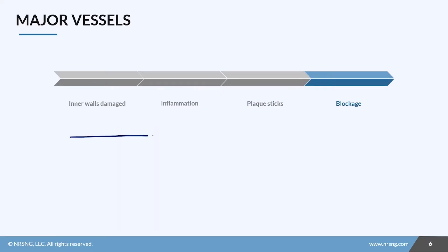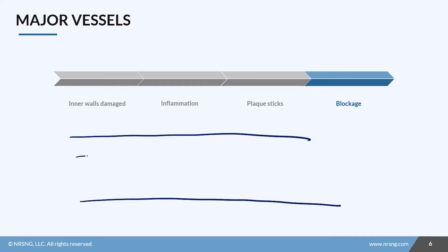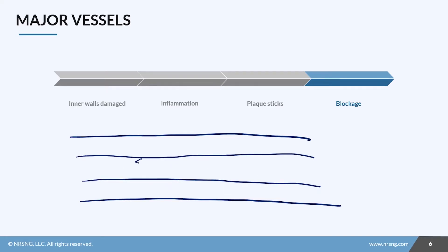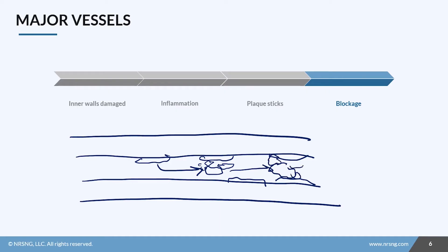Our last step is the actual blockage itself. We've already got thickened vessel walls and plaque building up around them. A piece of that plaque is going to break off, and the blood will begin a clotting process, creating even more clots around that chunk of plaque — all of which will block the pathway and cause an occlusion, cutting off oxygen perfusion to the heart muscle.